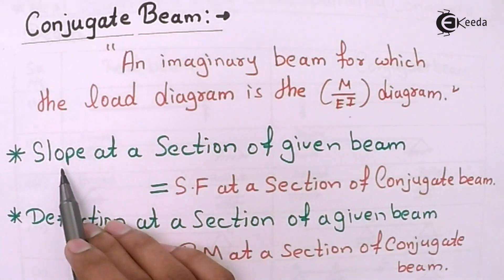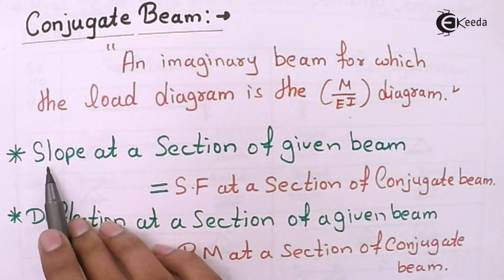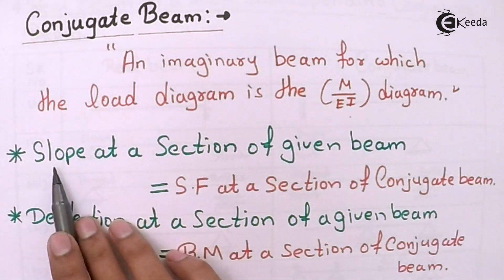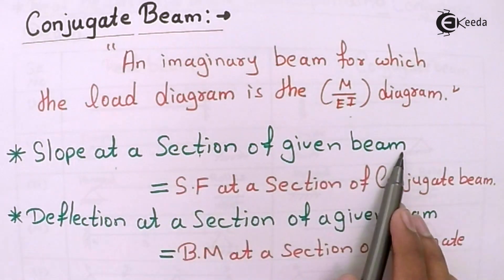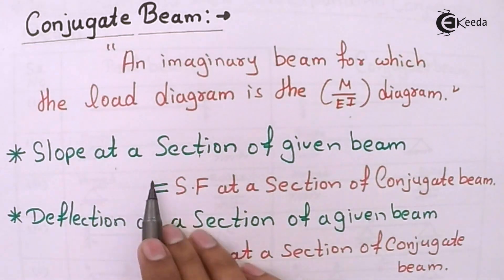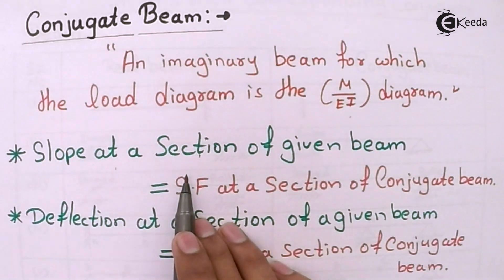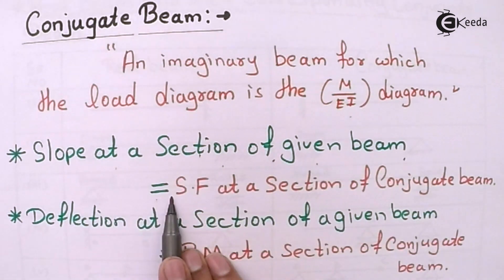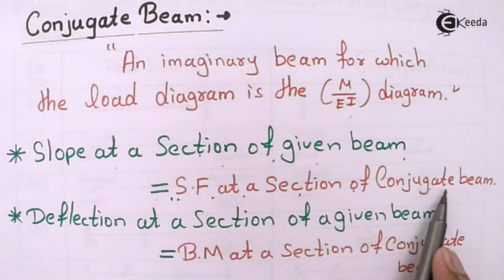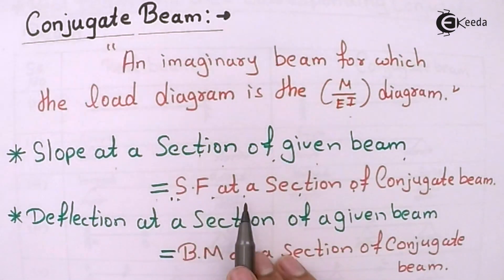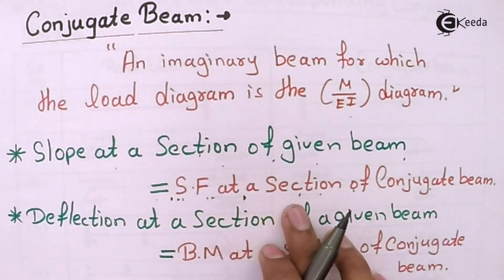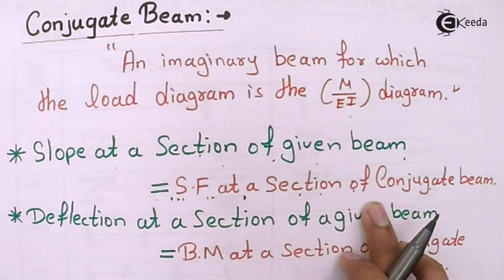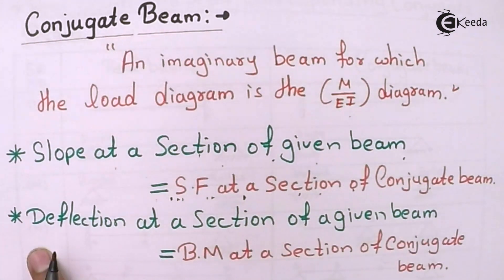When using the conjugate beam method to find slope or deflection: the slope at a section of a given beam is equal to the shear force at the corresponding section of the conjugate beam. So to find slope, we take the shear force at that section of the conjugate beam.